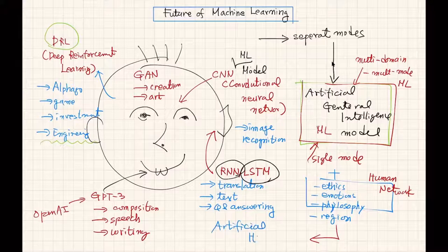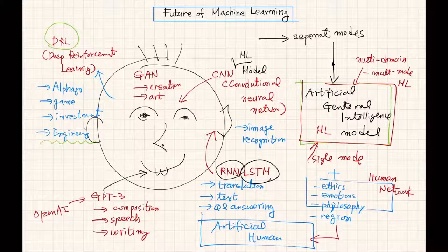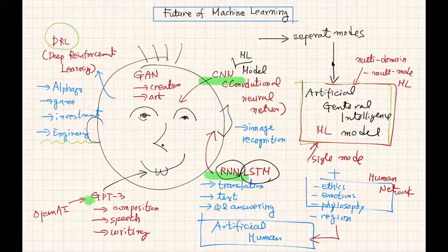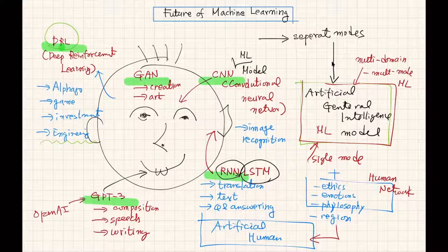Probably my expectation is that from 2030 to 2050, you will see some companies have artificial human. To summarize: we have CNN, RNN, GPT-3, generative adversarial network, and deep reinforcement learning. We're going to cover all these subjects this semester, mostly in May and June. Currently, all these models have separate structures, backpropagation models, and purposes.